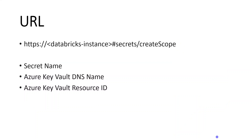Coming to the process — first we need to create one secret scope. For that, the syntax is: take our Databricks workspace name and at the end add the keyword 'secrets/createScope'. It will open a form where we fill details such as secret name, DNS name, and resource ID. These can be taken from the Azure Key Vault service. I will show those things as well.